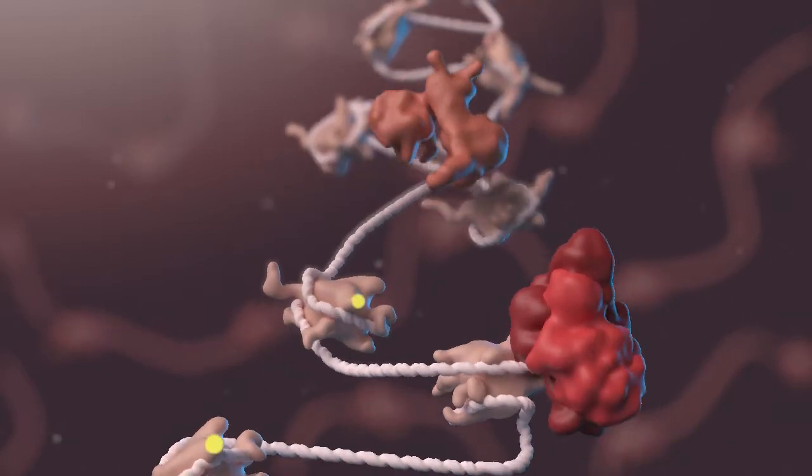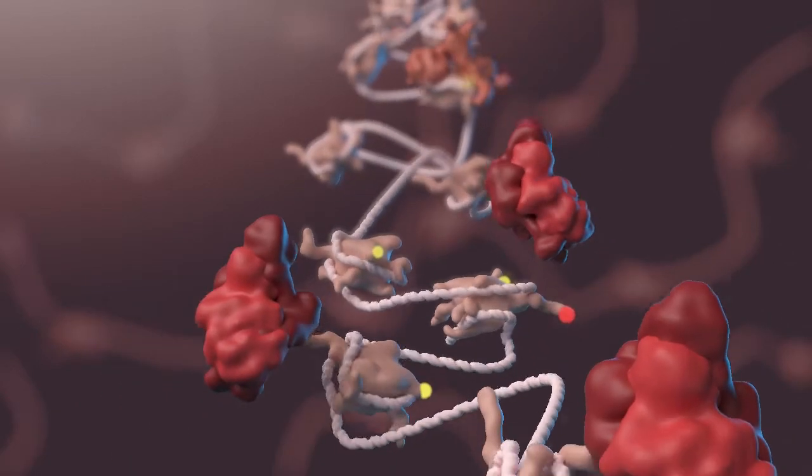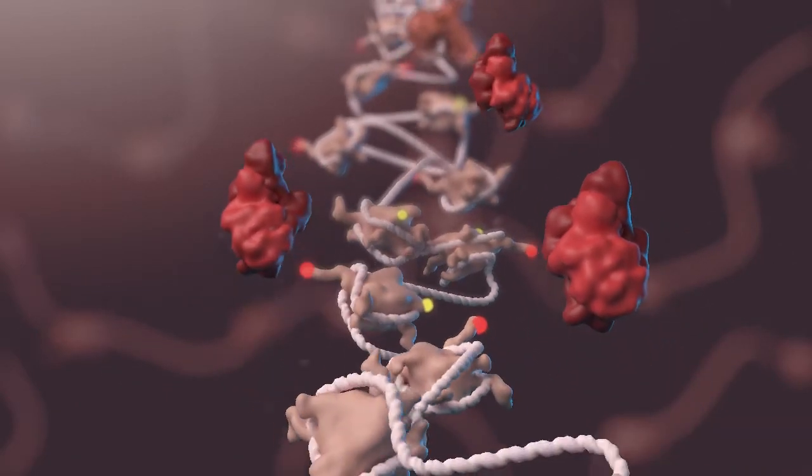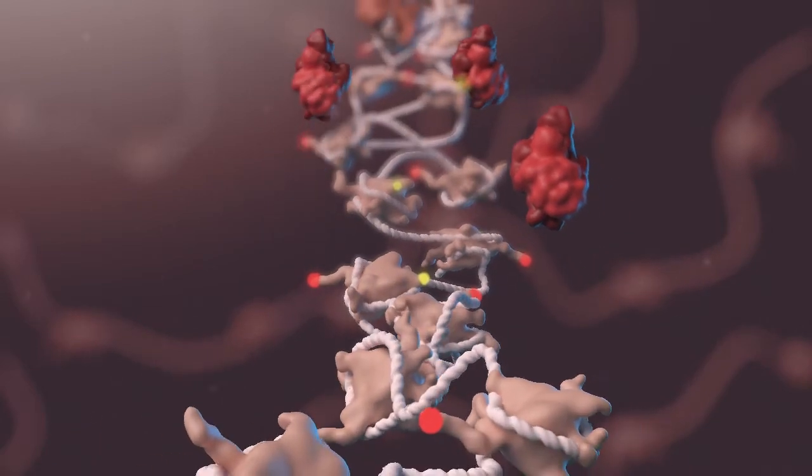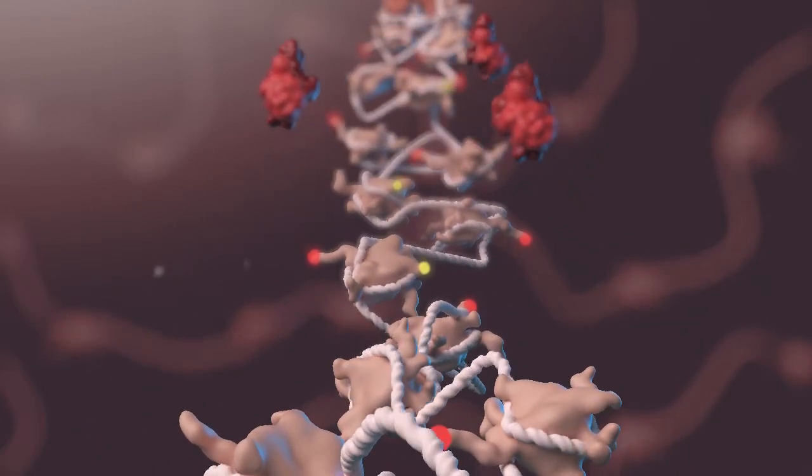PRC2 continues to lay repressive marks without regulation from compass subunit UTX, resulting in silencing of the expression of tumor suppressors.